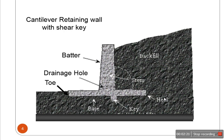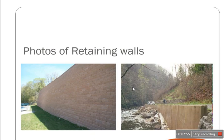These are the named parts of a retaining wall: the batter, the backfill, the stem, and a drainage hole where water coming from the backfill can be drained out. This side is called the toe and the other side is called the heel. A key is normally provided — if the wall moves due to lateral force, the key will resist the sliding. The base portion is called the footing. This example shows a stone masonry retaining wall, and this one is a concrete retaining wall used for a road.